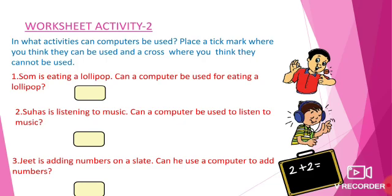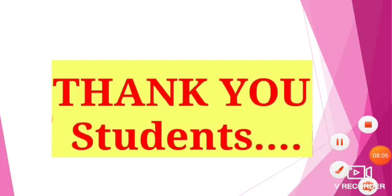In activity two, place a tick mark where you think a computer can be used and a cross where it cannot. For example: a boy eating a lollipop, Sugas listening to music, and Jeet adding numbers on a slate — can a computer be used for these? Think and do it. Thank you, students!